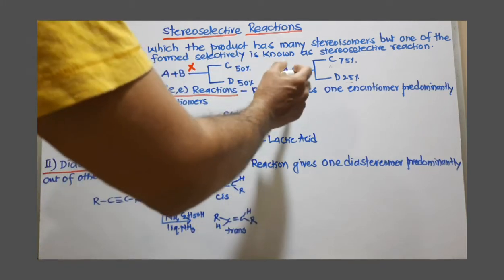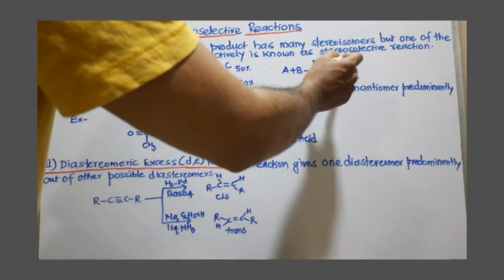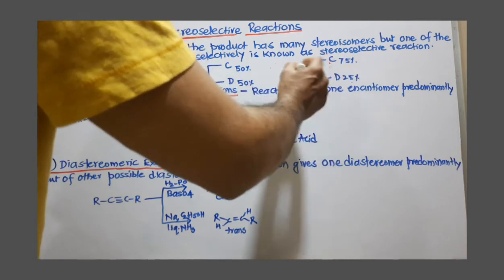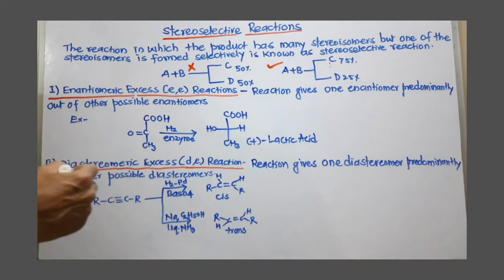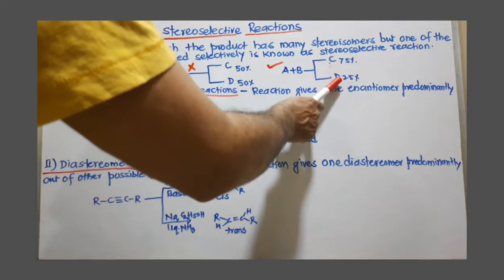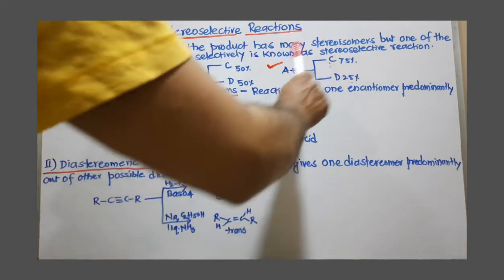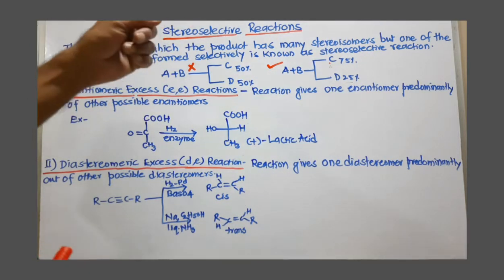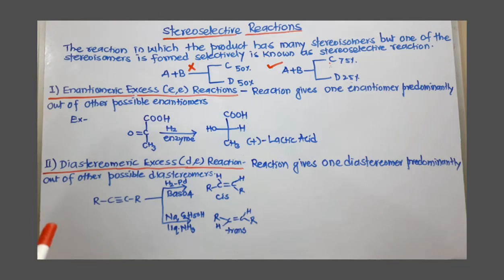But if the same reaction provides 75% C product and just 25% D product, then this is a stereoselective reaction. Because out of these two possible stereoisomers, one is selected predominantly. Because of this, this is called a stereoselective reaction.